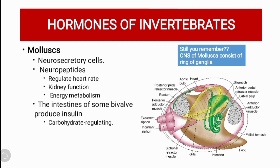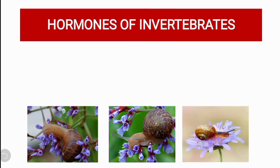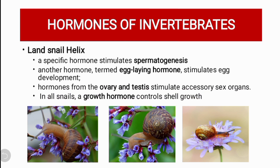Molluscs have neurosecretory cells that secrete neuropeptides. Their functions include regulating heart rate, kidney function — meaning the filtering of blood — and energy metabolism. The intestine of some bivalves also produces insulin, which regulates glucose by converting it into glycogen.